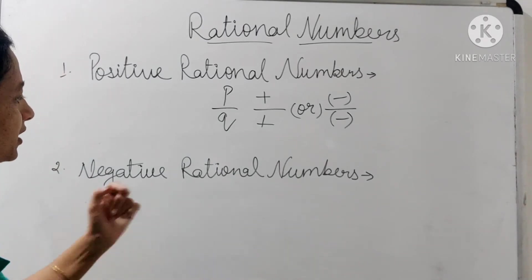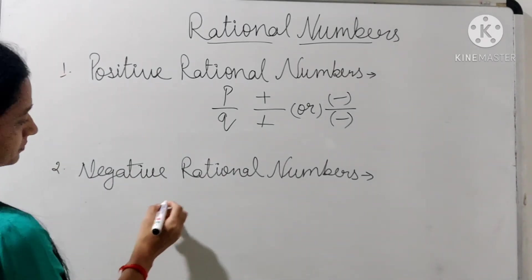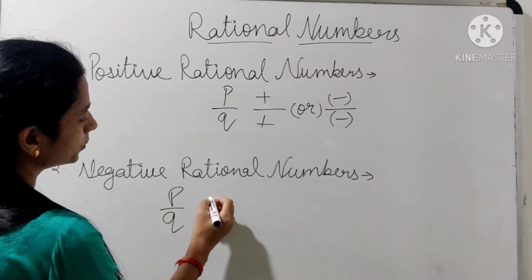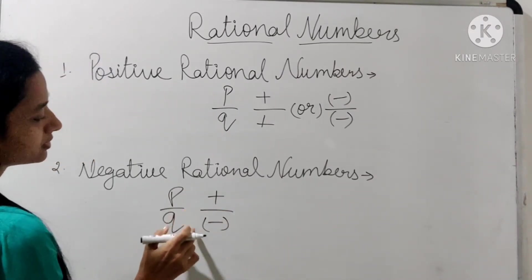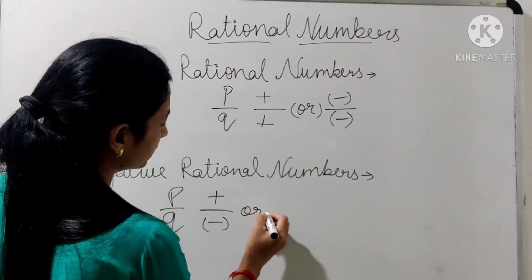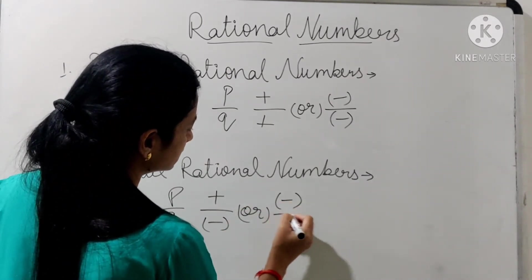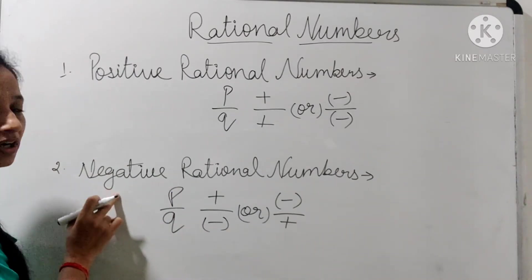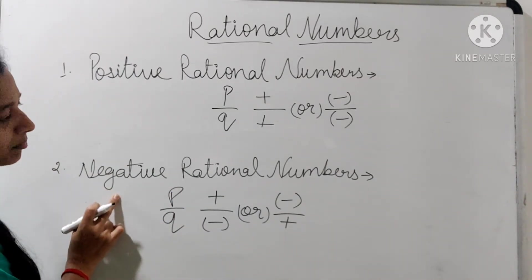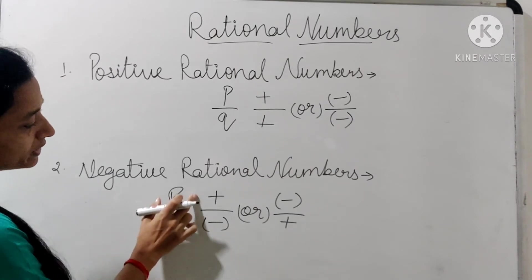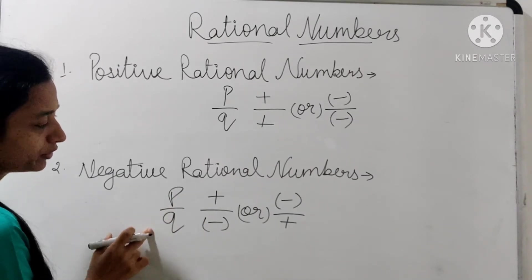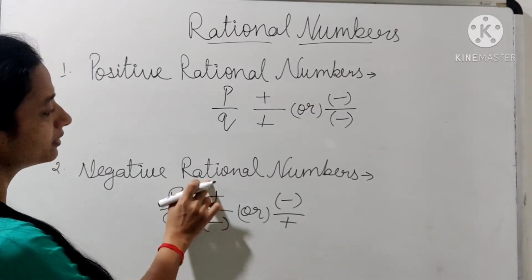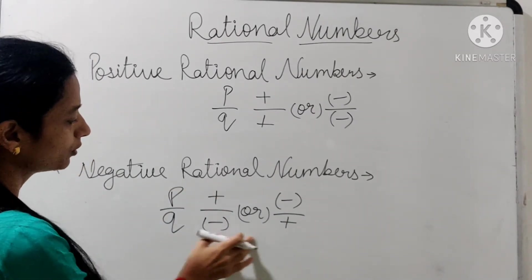Next, negative rational numbers — when P or Q have different signs. These type of rational numbers are called negative rational numbers. जब P or Q के sign अलग हैं, यानि numerator और denominator both are having different signs, those numbers are called negative rational numbers.